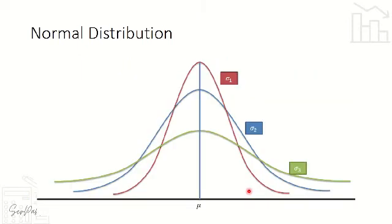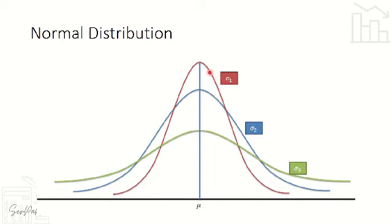There are variations in our normal distribution — the size of the graph can change depending on the given standard deviation. In this example, look at the three graphs: the green, blue, and maroon curves all have the same mean at the center, but they have different standard deviations. The normal distribution is determined by the mean and the standard deviation. The higher the deviation, the broader the graph; the lower the deviation, the narrower.